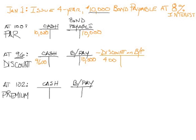Let's look at the premium. I received 102% of face value — that's going to be $10,200 of cash. At the tail end, I still only owe the bond payable; it's still only $10,000. But I have to account for that premium on bonds payable with another contra liability account. This gets added as a credit. That is how, on the original issue date, we add a bond payable to our records — whether we issue it at par, at a discount, or at a premium.